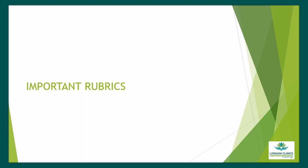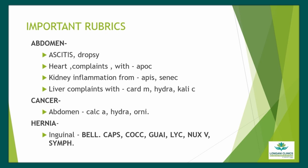Important rubrics — from the first chapter, Abdomen: Ascites Dropsy with Heart Complaints — drug is Apocyanum. Ascites with Kidney Complaints — drugs are Apis and Cinesio. Ascites Dropsy with Liver Complaints — drugs are Cardus Marianus, Hydrastes, and Calica. Cancer Abdomen — drugs are Calcarea Urse, Hydrastes, and Ornithogallon. Inguinal Hernia — drugs are Belladona, Capsicum, Cocculus, Guayacum, Lycopodium, Nuxomica, and Symphytum.